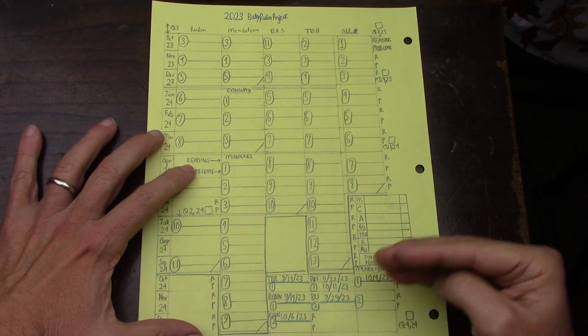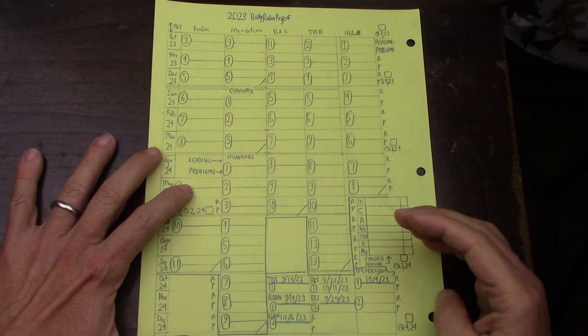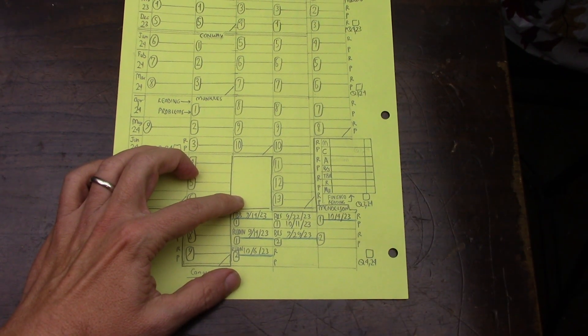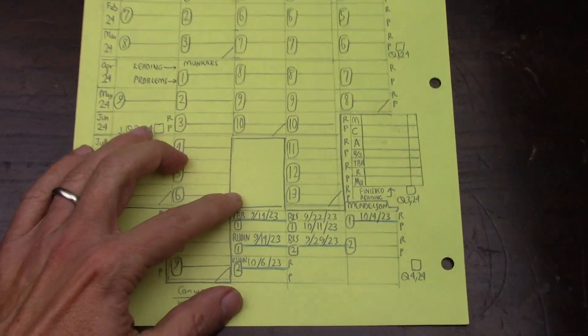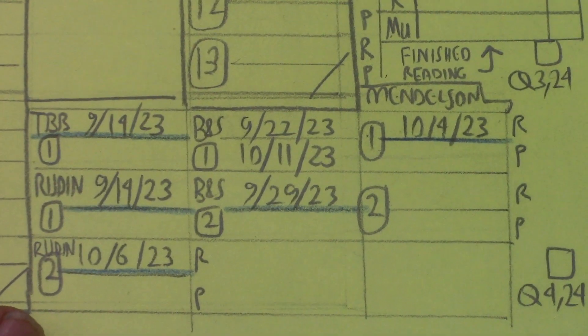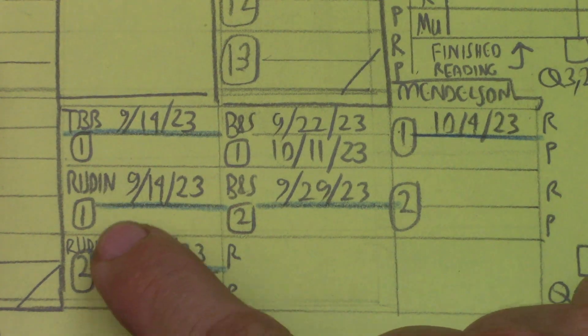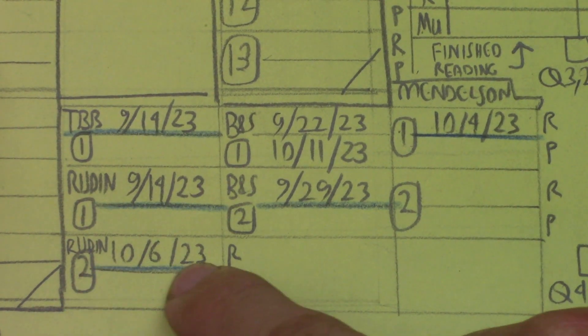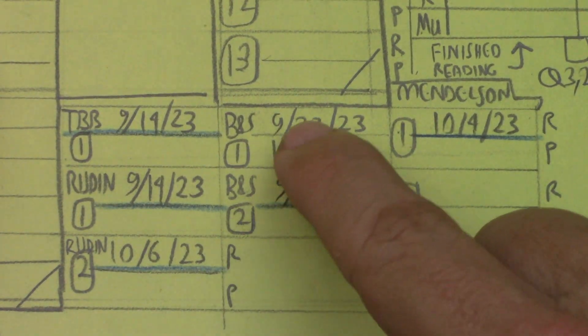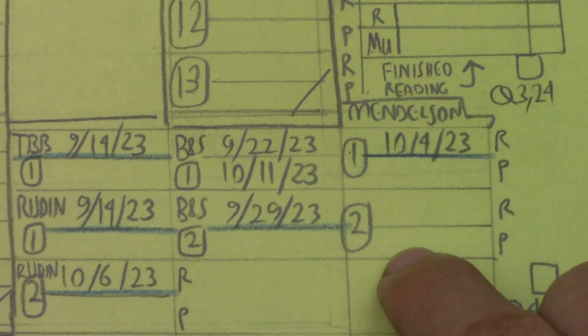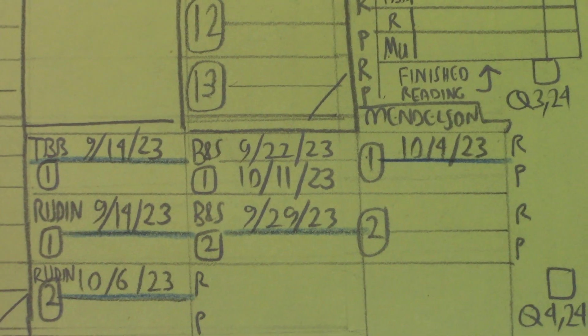And so in the beginning of this project, which just got started, I've done a lot of reading. I put what I've done so far at the very bottom down here. Yeah, so I've already read the first chapter of TBB, the first chapter of Rudin, and the second chapter of Rudin, and the first two chapters of Bartle and Sherbert, and the first chapter of Mendelssohn. And I'm almost done reading the second chapter.